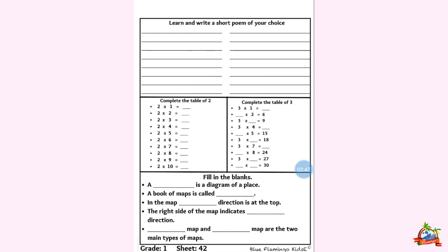Now let's complete the table of three. Three ones are three. Three twos are six. Three threes are nine. Three fours are twelve. Three fives are fifteen. Three sixes are eighteen. Three sevens are twenty-one. Three eights are twenty-four. Three nines are twenty-seven. Three tens are thirty. We have read the table of two and three.